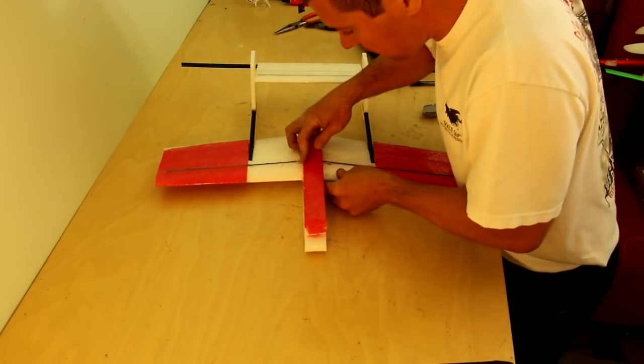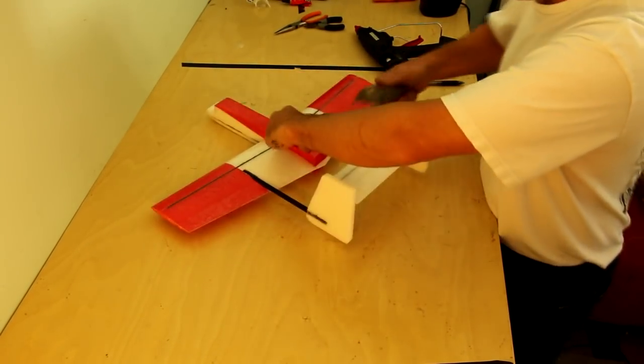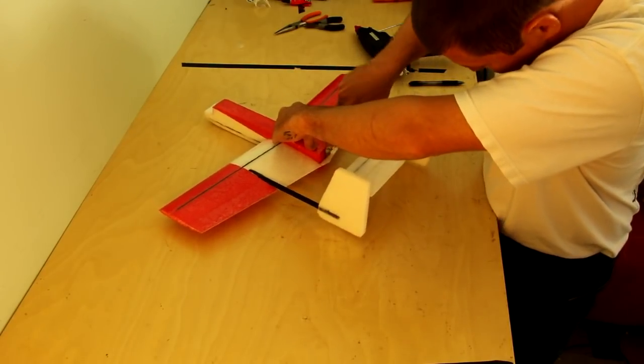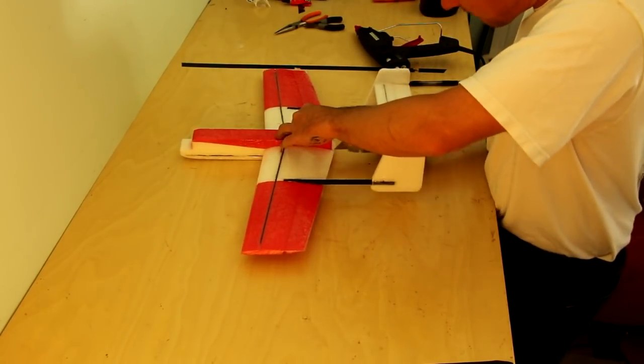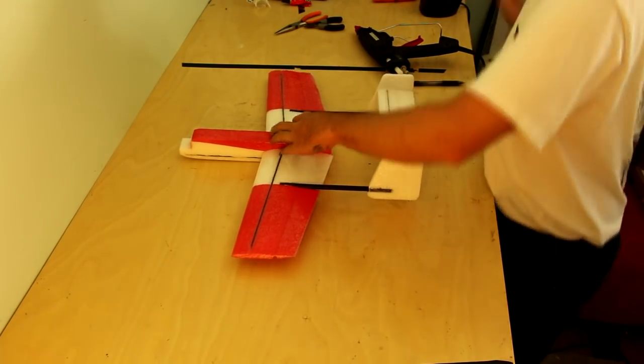You might notice the airplane looks a little bit different and that's because I laminated it just to give it some extra durability. While not required it definitely makes it stronger. You'll also notice a little bit of the wing hangs out behind the tail so I'm simply cutting that off.